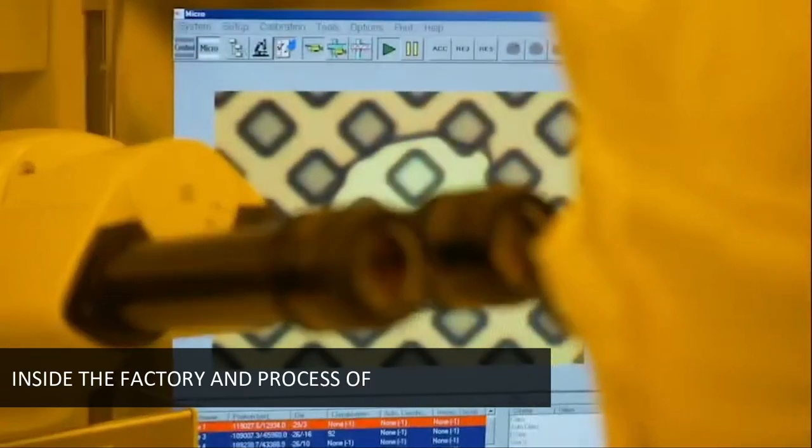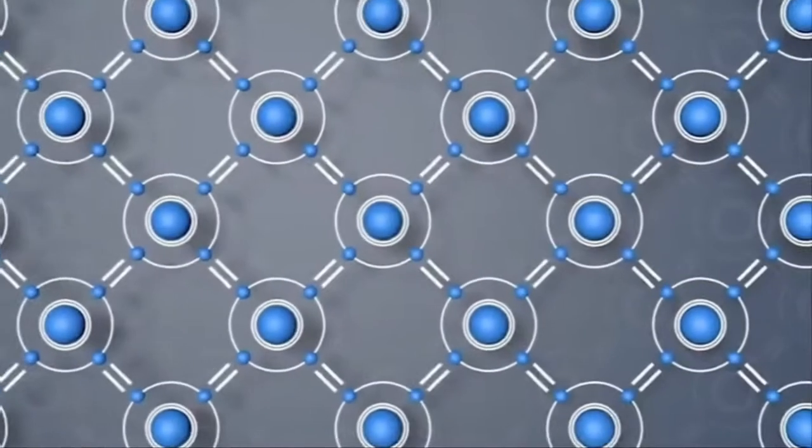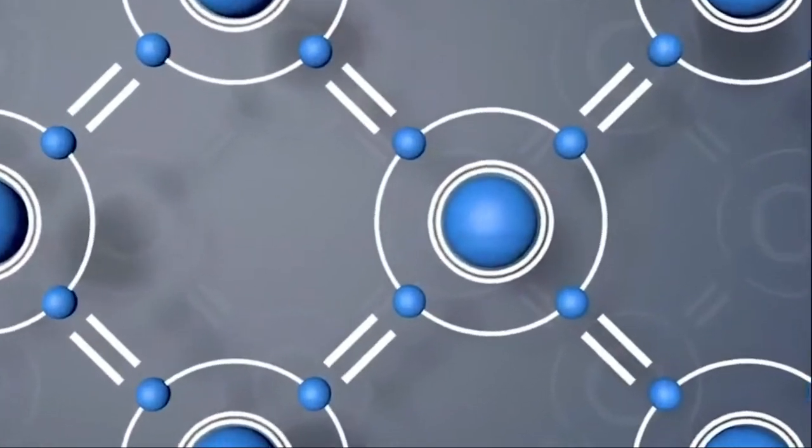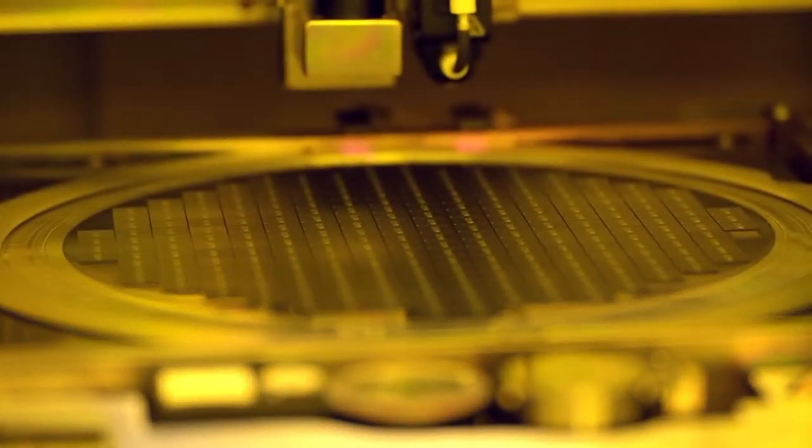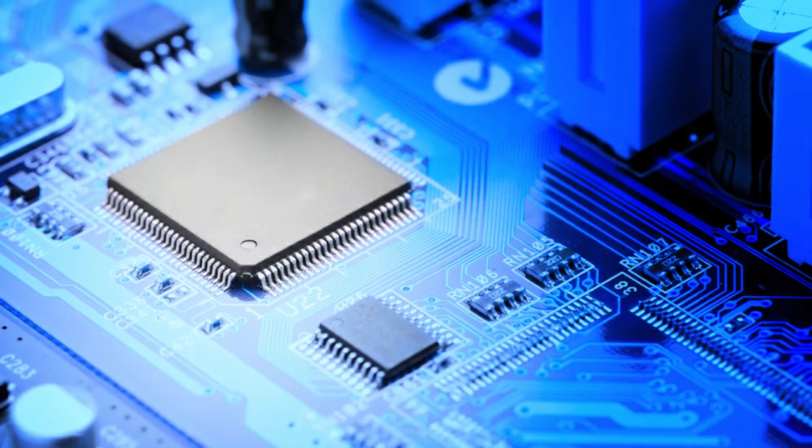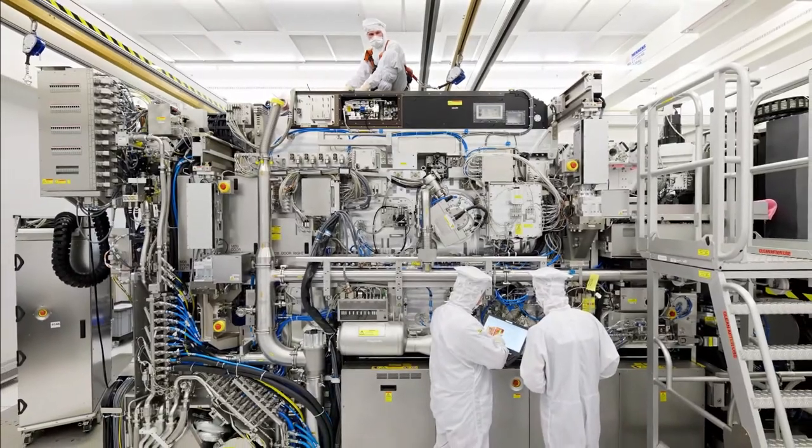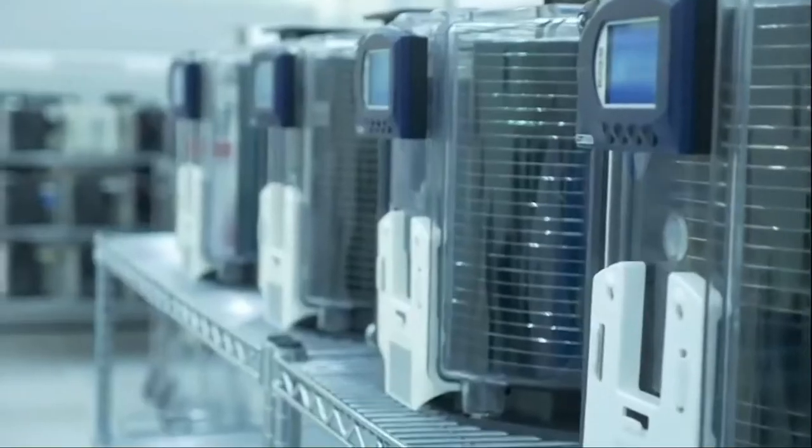Inside the factory and the process of manufacturing. Semiconductor device fabrication is the process used to manufacture semiconductor devices, typically the metal oxide semiconductor devices used in the integrated circuit chips that are present in everyday electric and electronic devices. This is a multi-step sequence of photolithic and chemical processing steps such as surface passivation, thermal oxidation, planar diffusion, and junction isolation, during which electronic circuits are gradually created on a wafer made of pure semiconducting material. Silicon is almost always used, but various compound semiconductors are used for specialized applications.